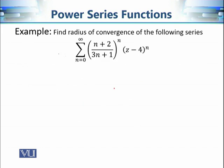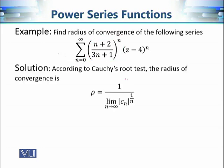Now let's calculate some radii of convergence with examples. We have the following power series function, where Cₙ is equal to (n+2)/(3n+1) raised to the power n, and the variable is Z minus 4. For calculating the radius of convergence, we only need the values of Cₙ. Let's apply Cauchy's root test and calculate the required limit. Sometimes the limit will exist and sometimes it will not.